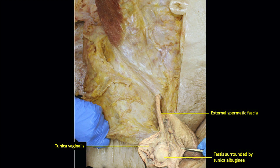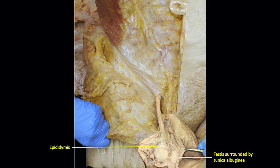From embryology, recall that the testis develops in the abdomen and must exit to allow sperm to become fertile, as sperm will not gain fertility at body temperature. As the testis exits via the inguinal canal, it takes with it various fascial layers from the abdominal wall muscles. The outer layer is the external spermatic fascia from the external oblique; the inner layer is the tunica vaginalis, the peritoneal layer. Draped on the testis is the epididymis, a coiled tube storing mature sperm. Sperm are produced in the testis but pass through the epididymis — a process lasting approximately eight to nine days — and are ejaculated from the tail of the epididymis at orgasm.